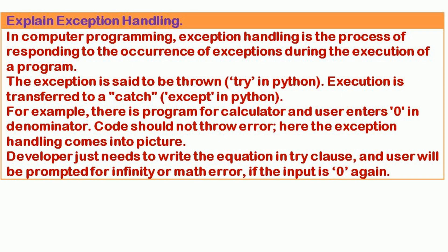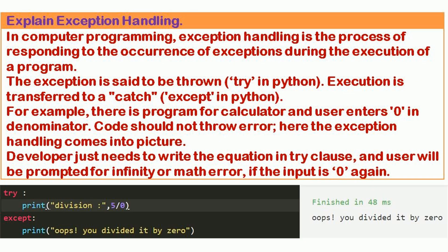Explain exception handling. In computer programming, exception handling is the process of responding to the occurrence of exceptions during the execution of a program. The exception is said to be thrown (try in Python), and execution is transferred to a catch (except in Python). For example, in a calculator program if the user enters 0 in the denominator, the code should not throw an error — this is where exception handling comes into picture.